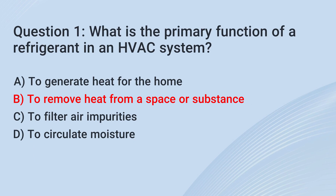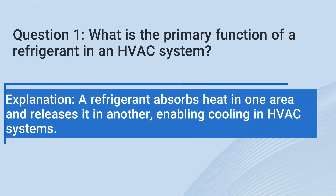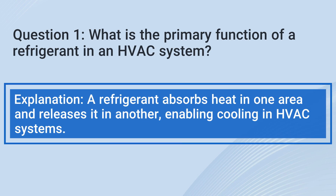The correct answer is B. To remove heat from a space or substance. Explanation: A refrigerant absorbs heat in one area and releases it in another, enabling cooling in HVAC systems.